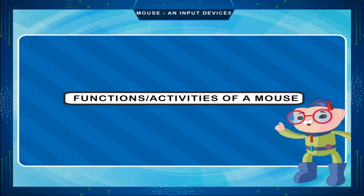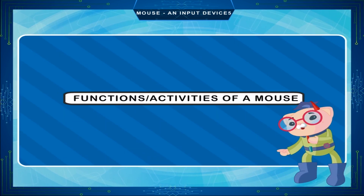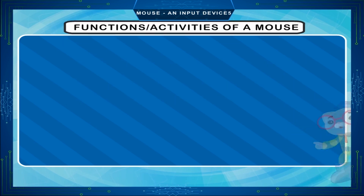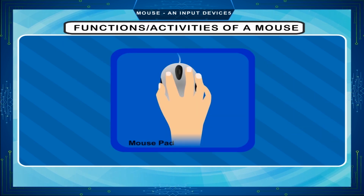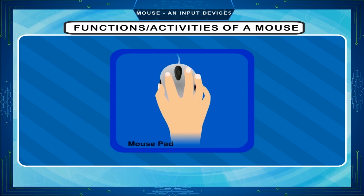Functions and activities of a mouse. Clicking: when you press any mouse button once, it makes a click sound. It is called clicking.